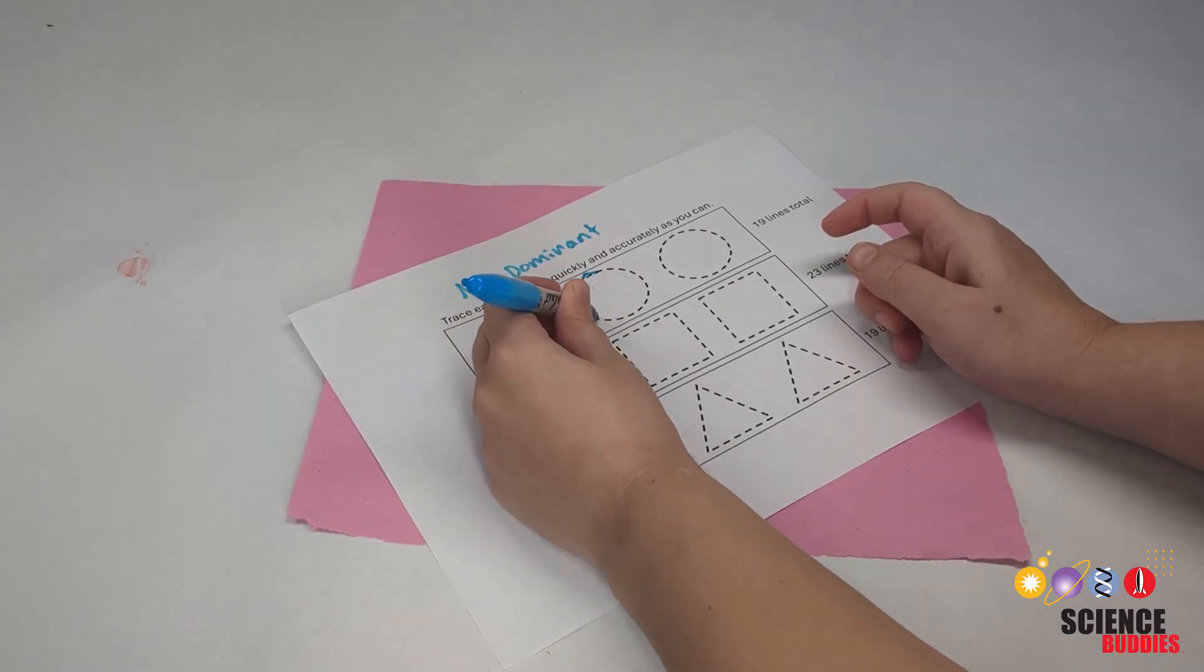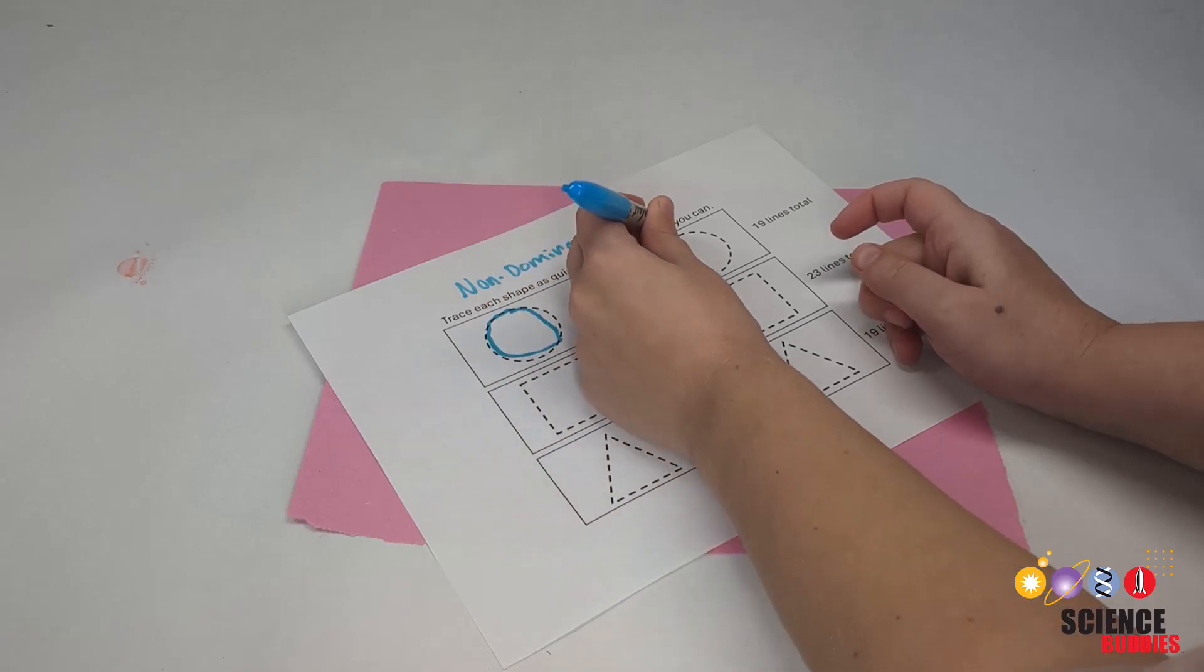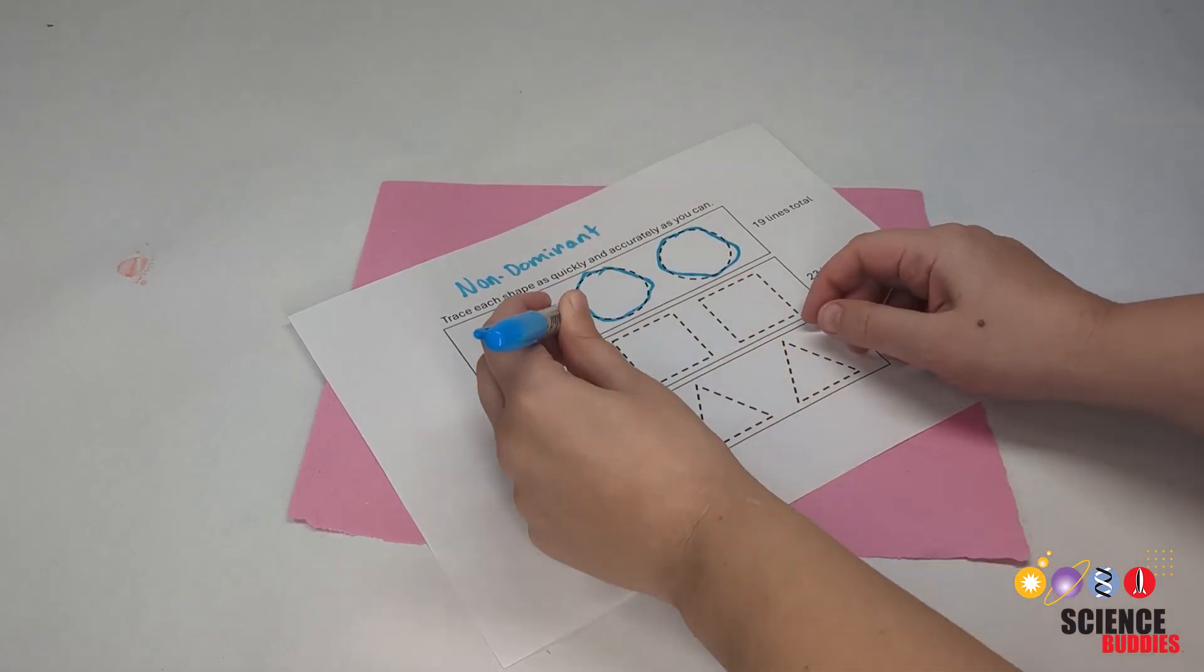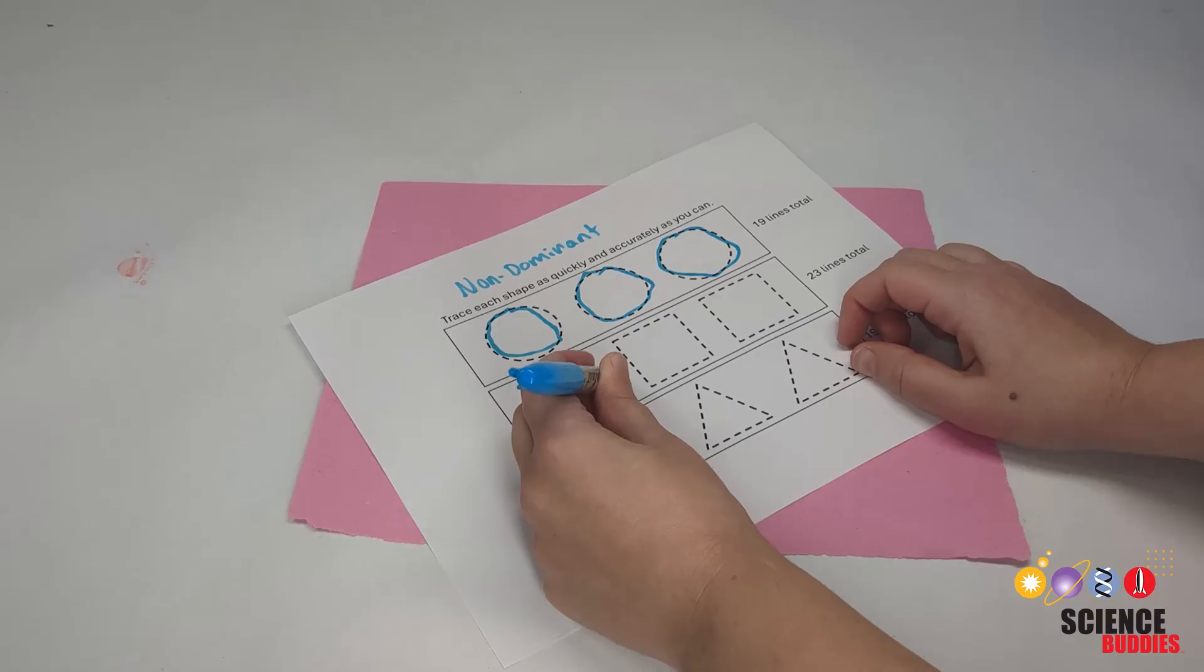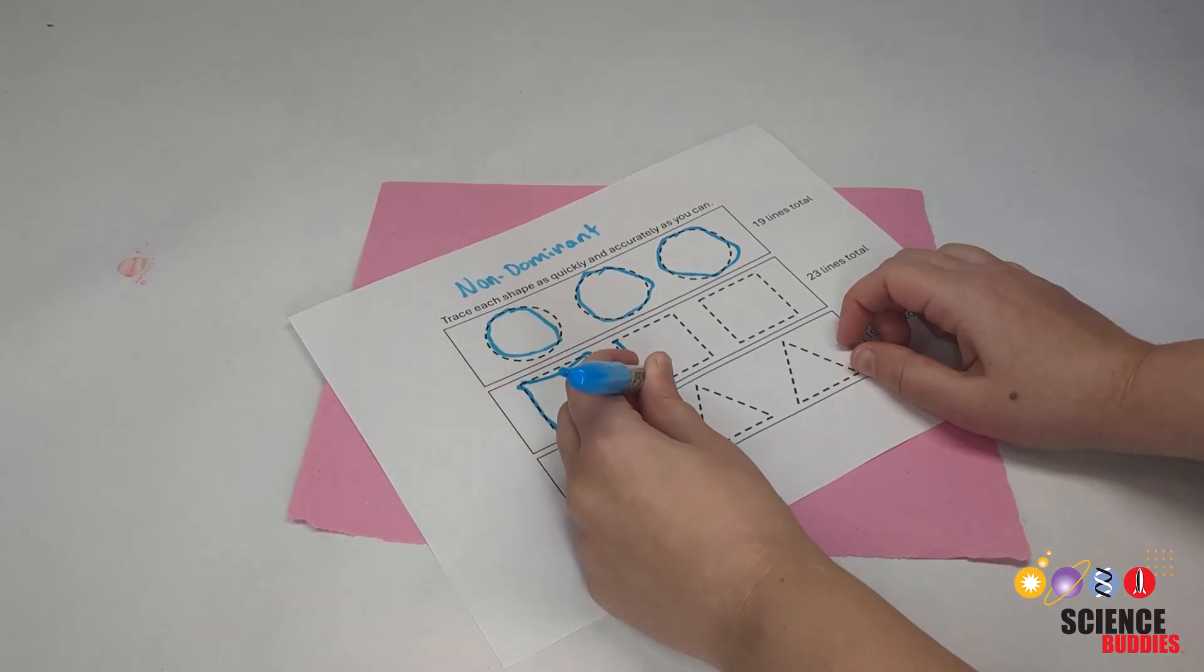To model changes in gravity during spaceflight, you will repeat the same method but trace each shape with your non-dominant hand. This will create our baseline motor skill performance before visualization.